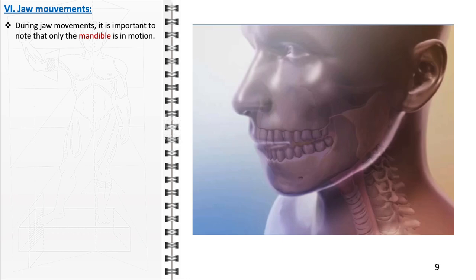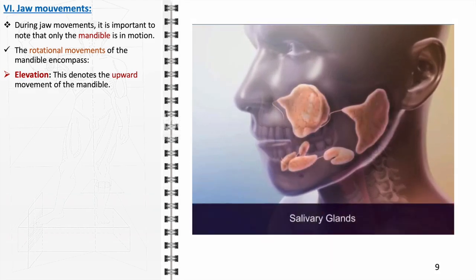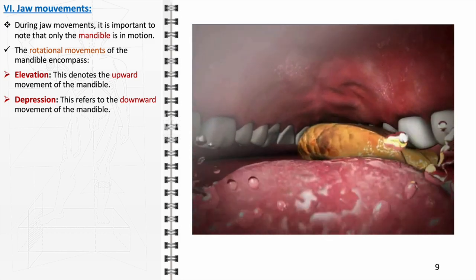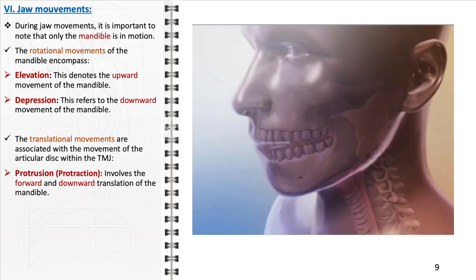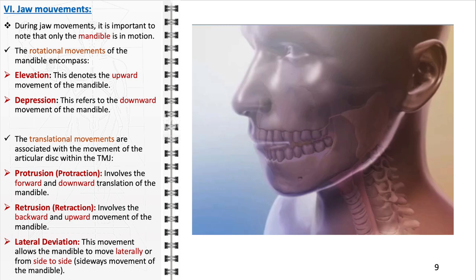Jaw movements are intricate, involving both rotational and translational actions primarily orchestrated by the mandible. Rotational movements include elevation — the upward movement of the mandible during jaw closing — and depression, the downward movement during jaw opening. Translational movements are associated with movement of the articular disc within the temporomandibular joint and include protrusion, the forward and downward translation of the mandible; retrusion, the backward and upward movement returning the jaw to a neutral position; and lateral deviation, which allows the mandible to move from side to side.